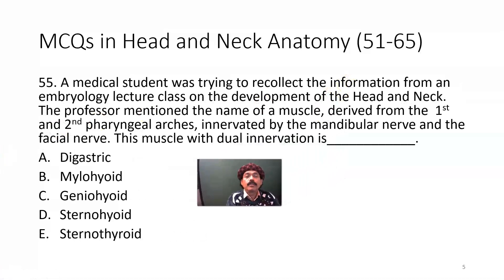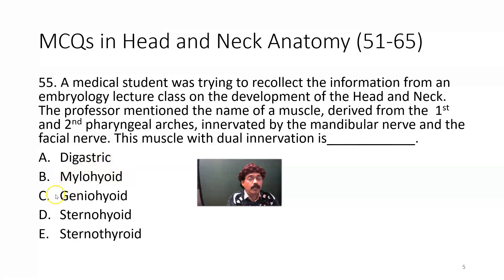A medical student was trying to recollect information from an embryology lecture on the development of the head and neck. The professor mentioned a muscle derived from the first and second pharyngeal arches, innervated by the mandibular nerve and the facial nerve. The muscle with dual innervation is the digastric — the anterior belly by the mylohyoid nerve, which is a derivative of the mandibular nerve, and the posterior belly by the facial nerve.